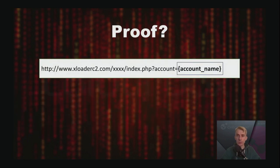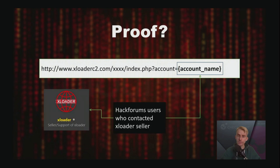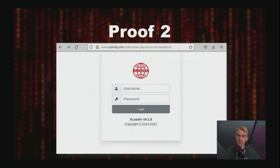One step remained to finally prove we found real C2 servers: finding or guessing a valid account name to see the C2 panel login form instead of a 404 error. We came up with the following trick: we collected nicknames of HackForums users who contacted XLoader sellers, then tried to access the supposed C2 servers using domain names from the collected list, known campaign IDs extracted from XLoader samples, and the collected nicknames. After a few minutes, we found an active account name and saw the XLoader login page. This was a great success.